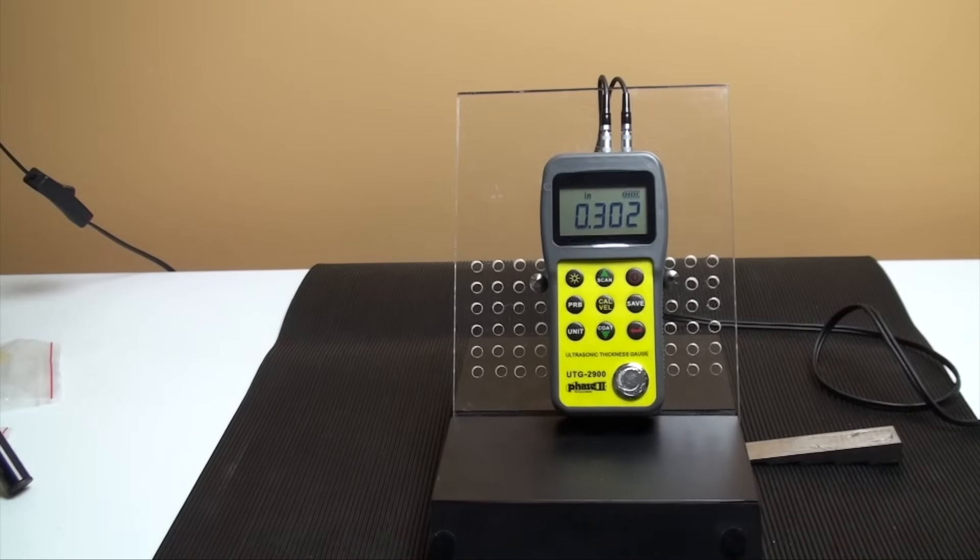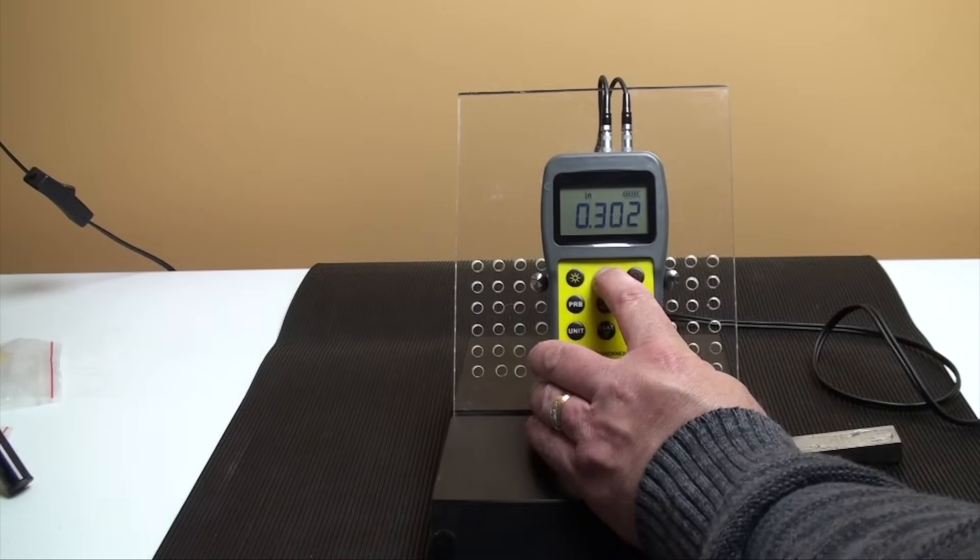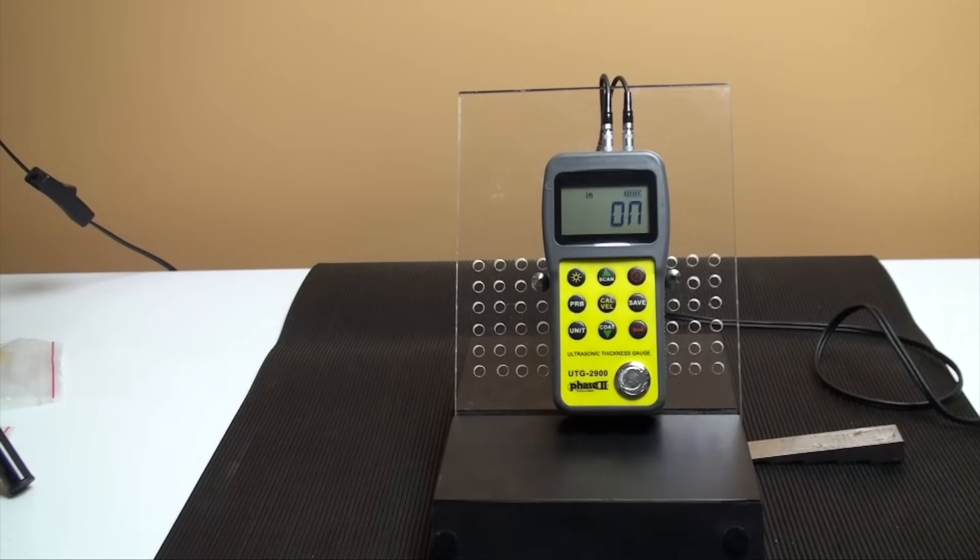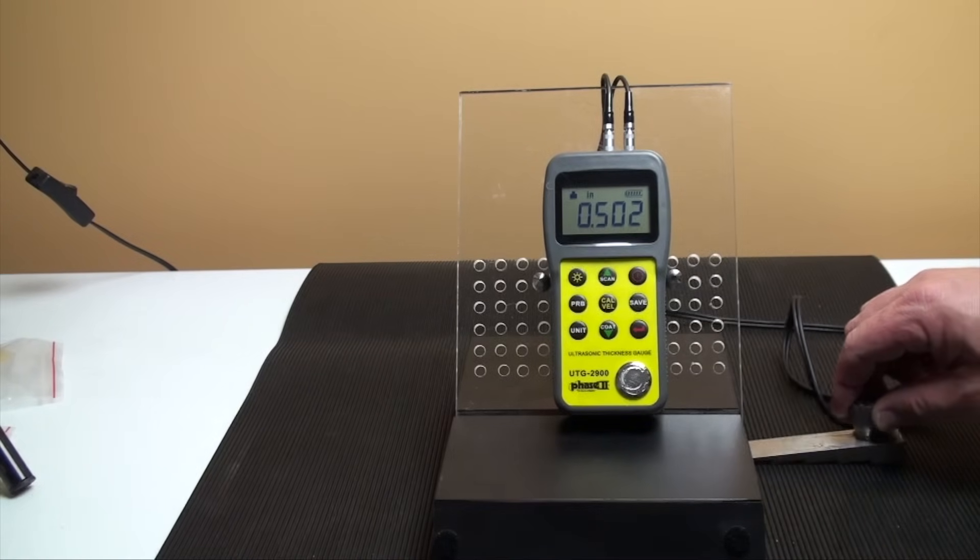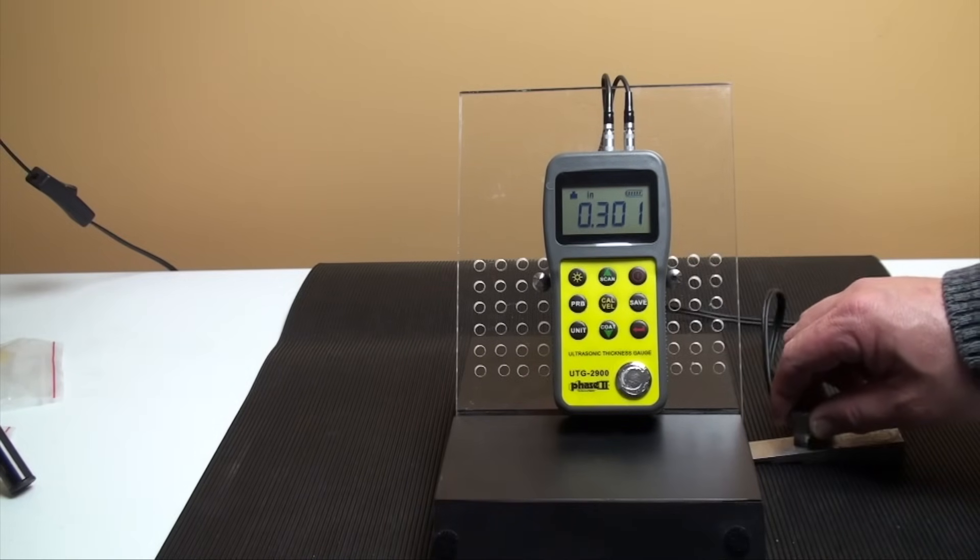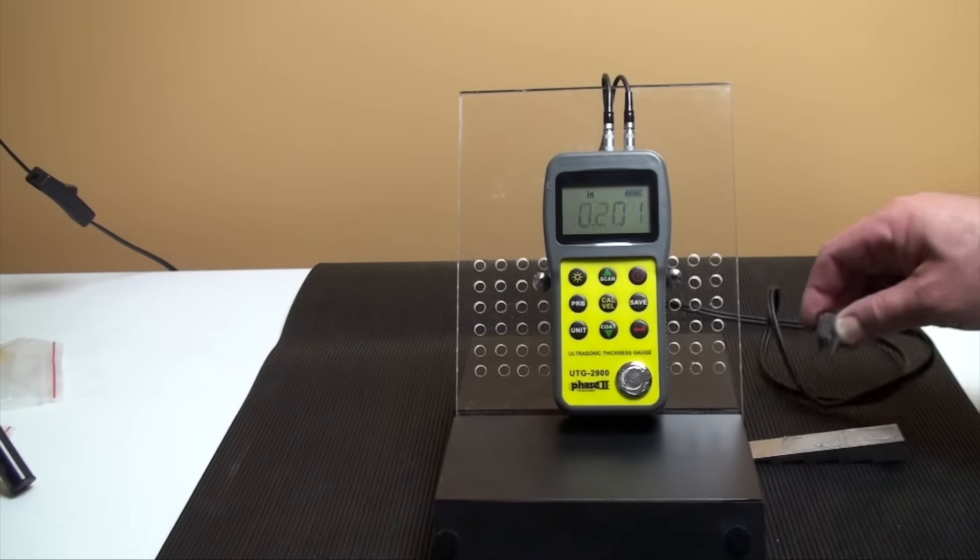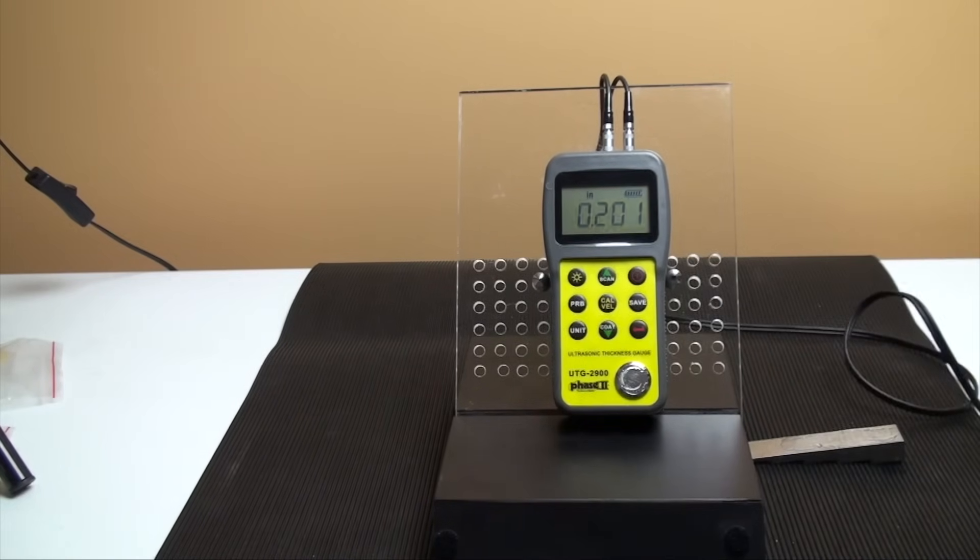The scan key will allow you to run the transducer across a given area. The transducer takes 10 readings per second and displays readings while scanning. When the probe is lifted from the material, the unit will read the lowest value in the scan.